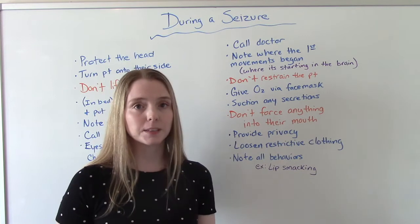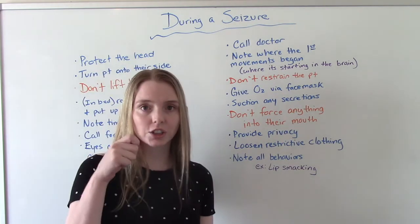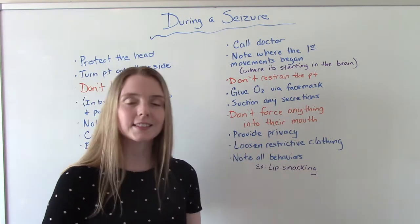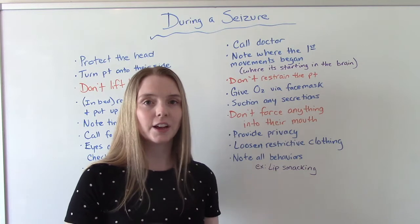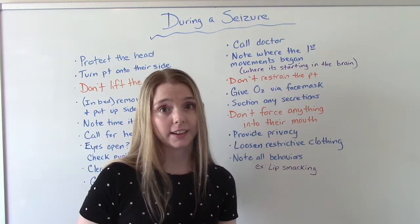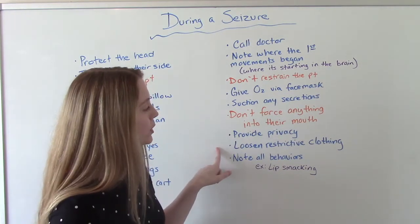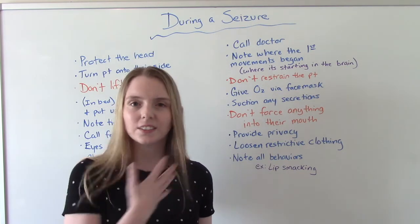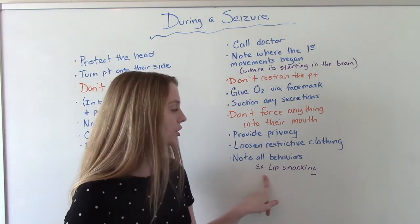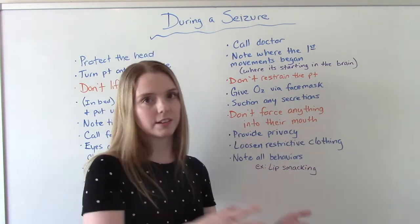Give oxygen, usually via face mask at 8 to 10 liters. Suction any secretions using the oral suction device like the yanker. We're never going to force anything into their mouth — that's an old-school myth. Provide privacy if possible. Loosen any restrictive clothing or jewelry, anything tight around the neck. And note all their behaviors — a common example is lip smacking, but there could be many other behaviors that go along with the seizure activity.